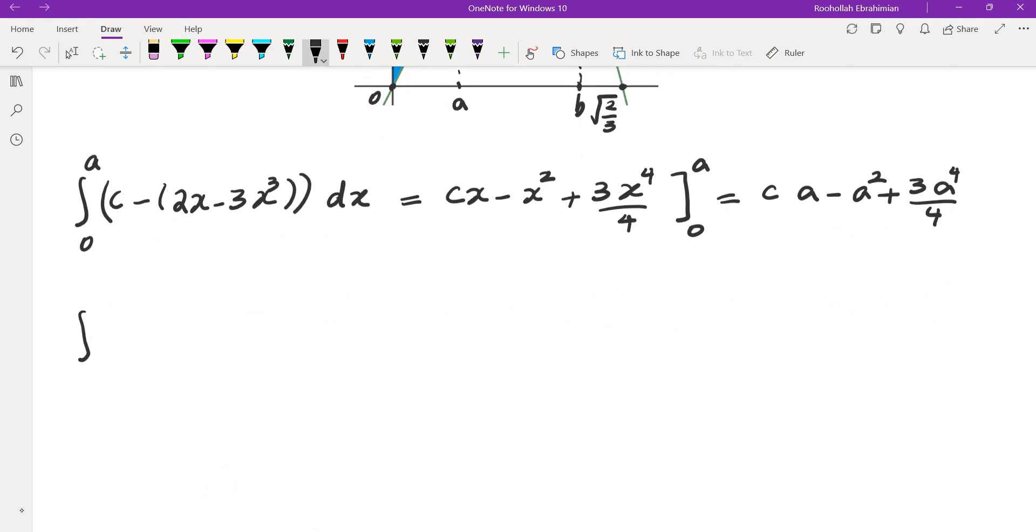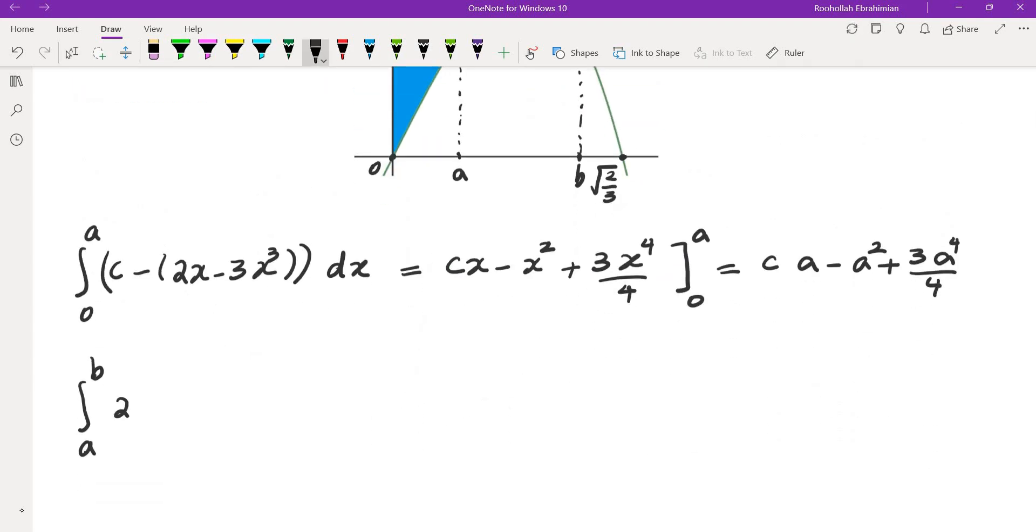The green area is an integral from A to B of top minus bottom. What is top? Top is 2x minus 3x cubed minus bottom, and bottom is c, dx.